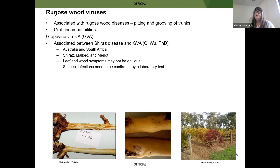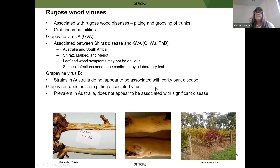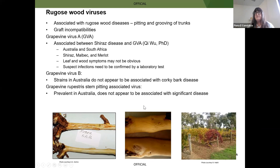Grapevine virus B is present in Australia, but we don't find it very frequently. Overseas it's been associated with corky bark disease, but we don't see corky bark in Australia — probably down to the strains — so we're very lucky we don't have to manage that disease. Grapevine rupestris stem pitting causes stem pitting in Rupestris St. George rootstocks. This virus is really prevalent in Australia; about 95% of grapevines that we test seem to have it, and it doesn't appear to cause significant disease.